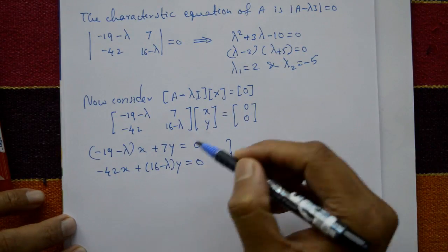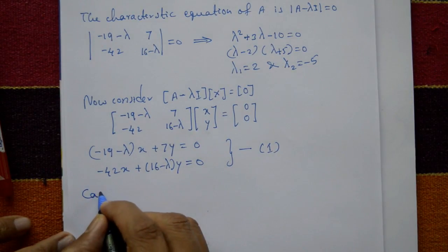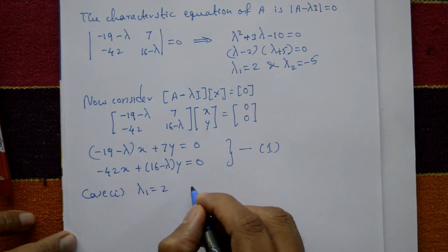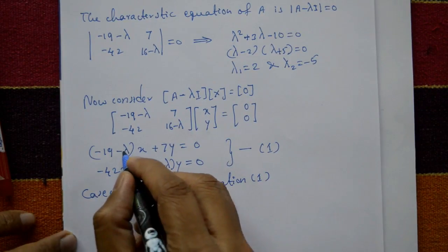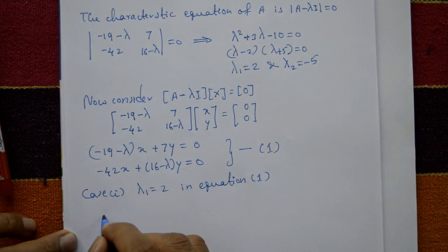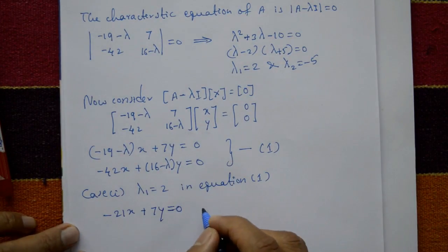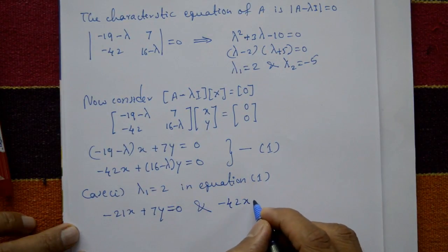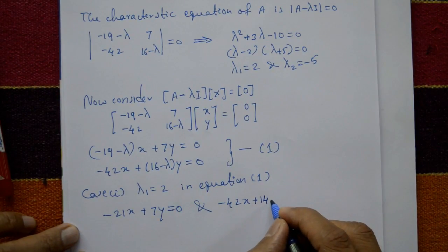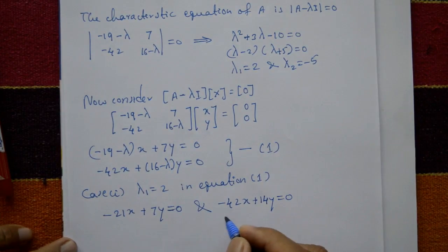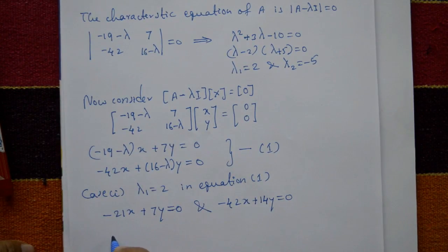Case 1: lambda 1 equals 2. Put lambda equal to 2 in the equations. The first equation becomes minus 21x plus 7y equals 0, and the second equation is minus 42x plus 14y equals 0. Both equations give the same eigenvectors, so take any one equation.